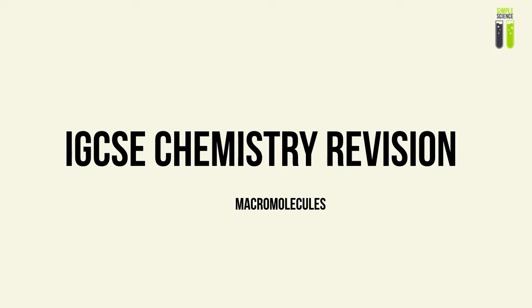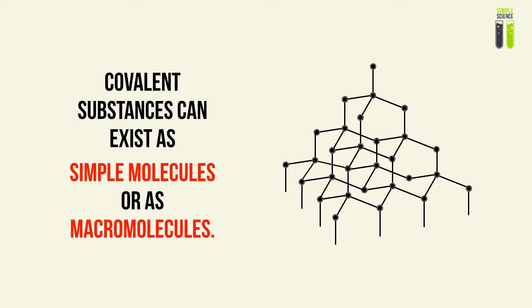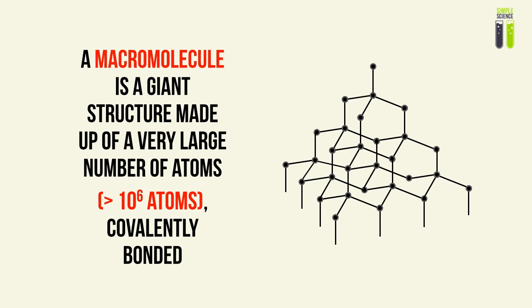Welcome to our simple science video. In this video we're going to talk about macromolecules. In our previous videos we looked at simple molecules and covalent bonding as a type of covalent structure. Covalent structures can exist both as simple molecules and as macromolecules. A macromolecule is basically a giant structure made up of a huge number of atoms — over 10 million atoms — to be considered a macromolecule.